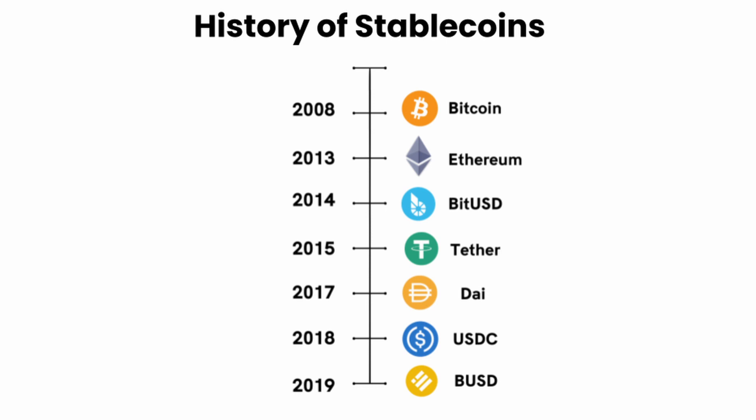BitUSD was the stablecoin and BitShares was the stabilizing cryptocurrency, and the transactions between one and the other were supposed to keep the value of BitUSD at one dollar. BitUSD effectively died in 2019 when it lost 30% of its value and never managed to recover it.